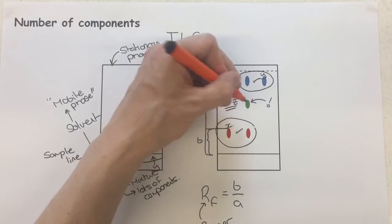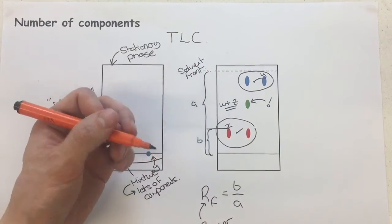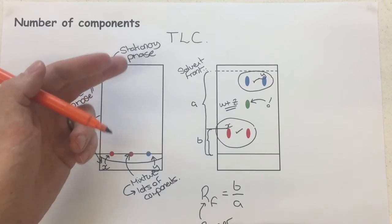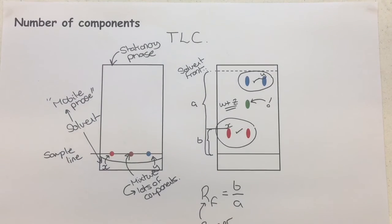You would need to perhaps try a new solvent to see if you get four spots or more. Or you could try gas chromatography to try and compare this to that and identify another component.